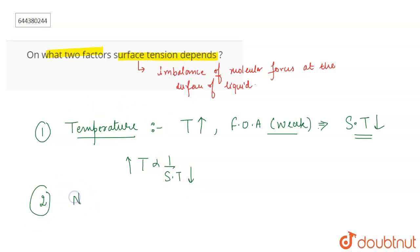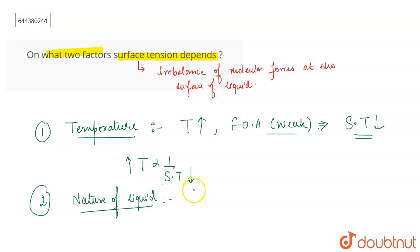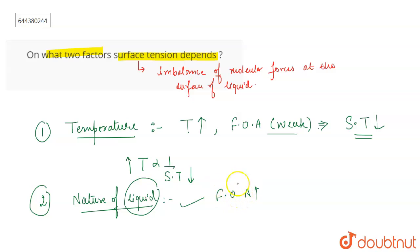The next factor is the nature of the liquid. Surface tension depends upon the nature of the liquid. If the liquid has greater intermolecular forces of attraction, it is going to have greater surface tension. So it depends on what type of liquid you are using — if that liquid has greater intermolecular forces of attraction and large attractive forces, then it will obviously have greater surface tension. Therefore, surface tension depends upon temperature and the nature of the liquid.